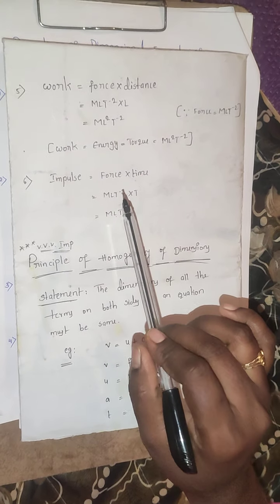Next is acceleration. What is the general formula of acceleration? Velocity divided by time. The velocity dimensional formula gives LT⁻¹, divided by T, so acceleration is LT⁻². Since mass is not involved, M to the power of 0. So dimensional formula of acceleration is M⁰LT⁻².